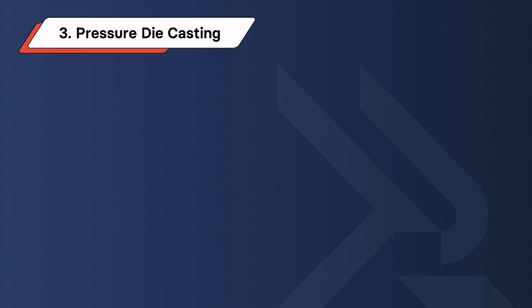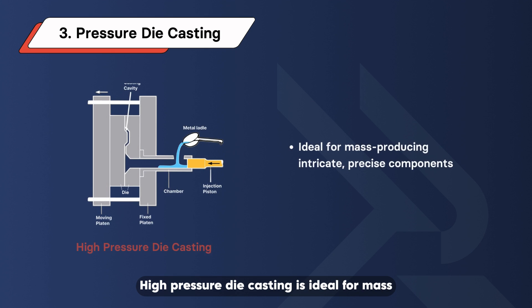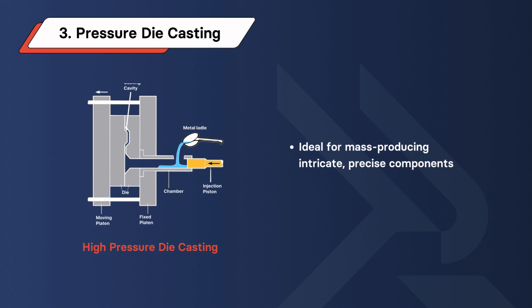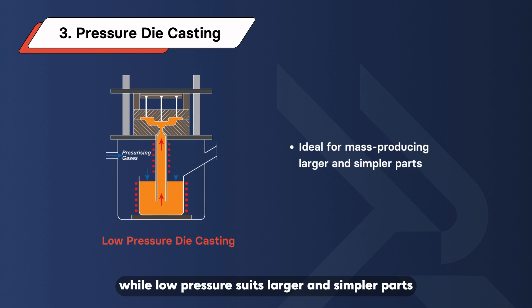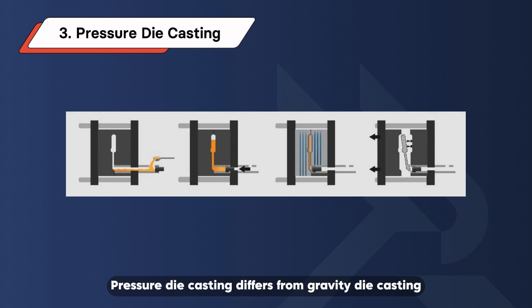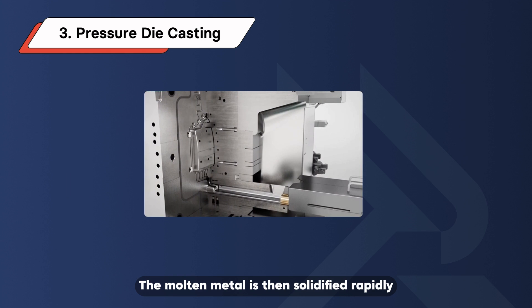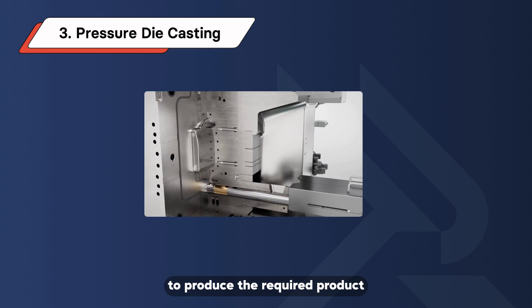Pressure Die Casting. Pressure die casting comes in two varieties: low pressure and high pressure. High pressure die casting is ideal for mass-producing intricate, precise components, while low pressure suits larger and simpler parts. Pressure die casting differs from gravity die casting in the process of filling the mold, where pressure die casting uses high pressure injection of molten metal into the metal mold. The molten metal is then solidified rapidly to produce the required product.